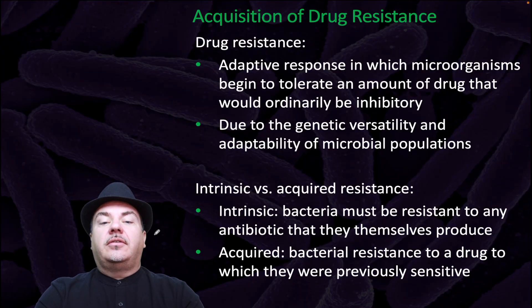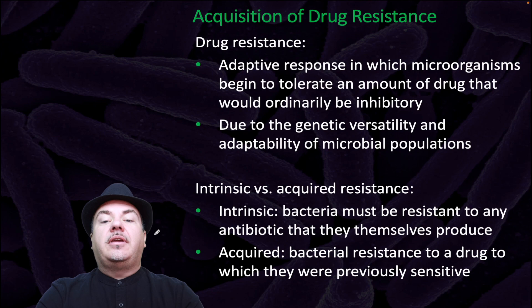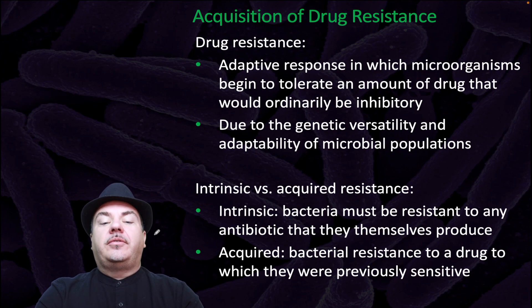Drug resistance is an adapted response in which microorganisms begin to tolerate an amount of drug that would ordinarily be inhibitory. This is due to the genetic versatility and adaptability of microbial populations. Intrinsic resistance means bacteria must be resistant to any antibiotic that they themselves produce. Acquired resistance refers to bacterial resistance to a drug to which they were previously sensitive.